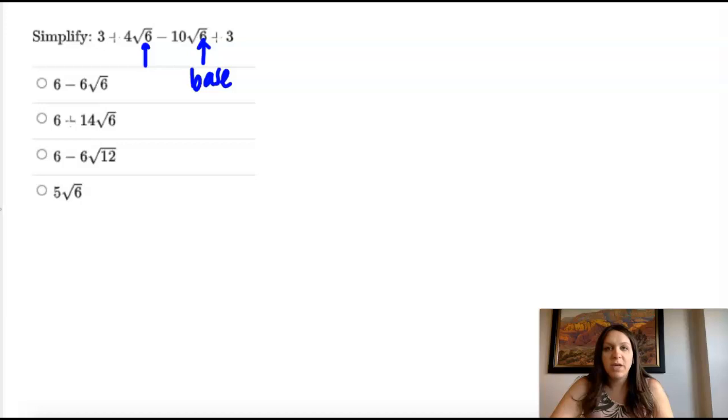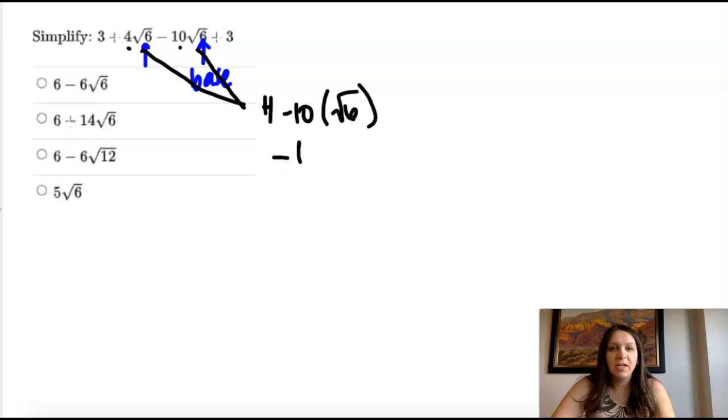So for this one the base is six but it's underneath the square root and so when I combine these two terms I take the four minus the ten and then the square root of six stays. So this would be four minus ten negative six square root of six.